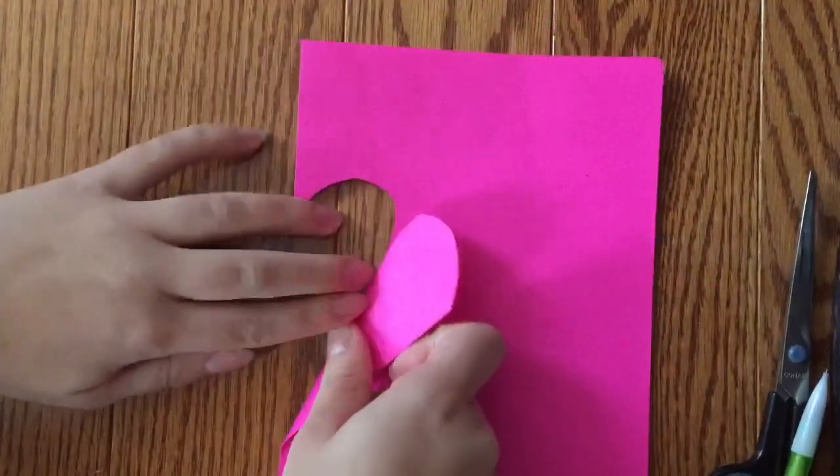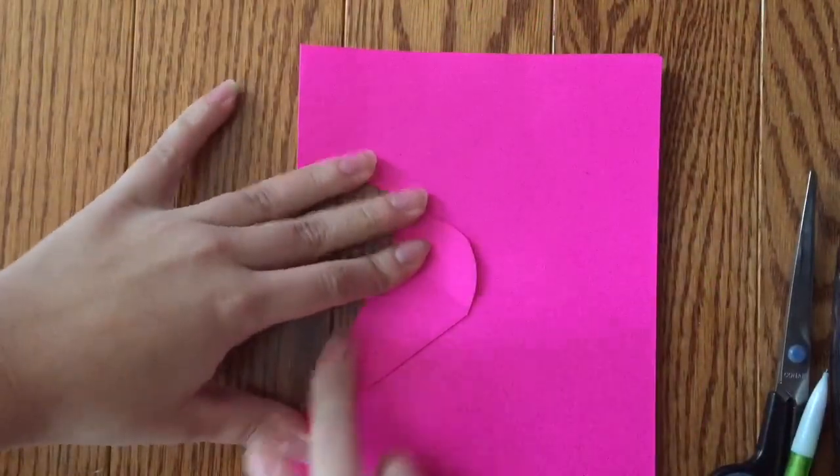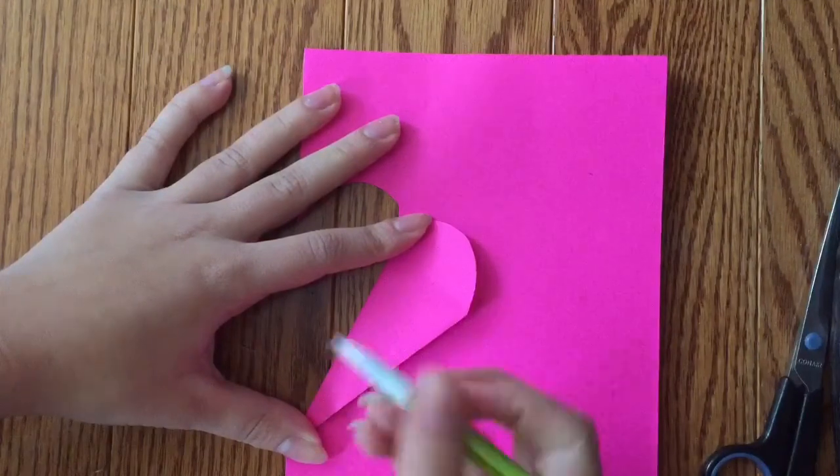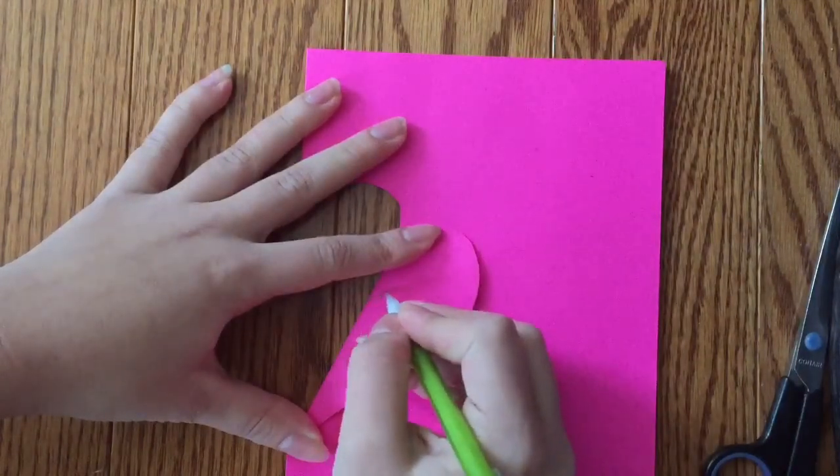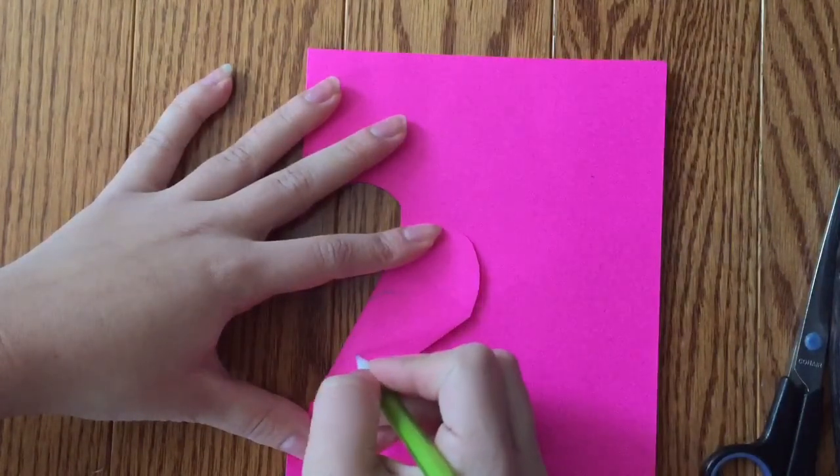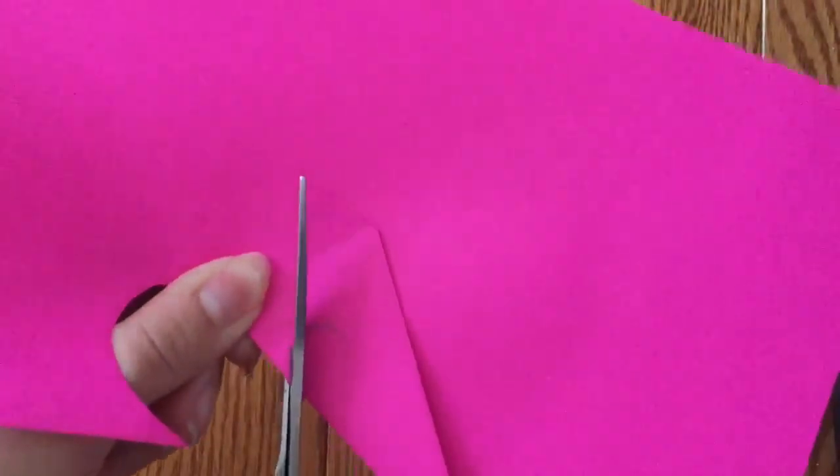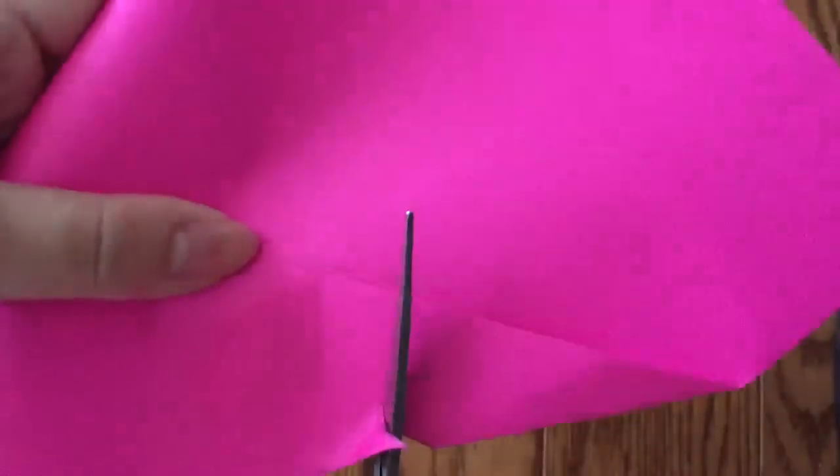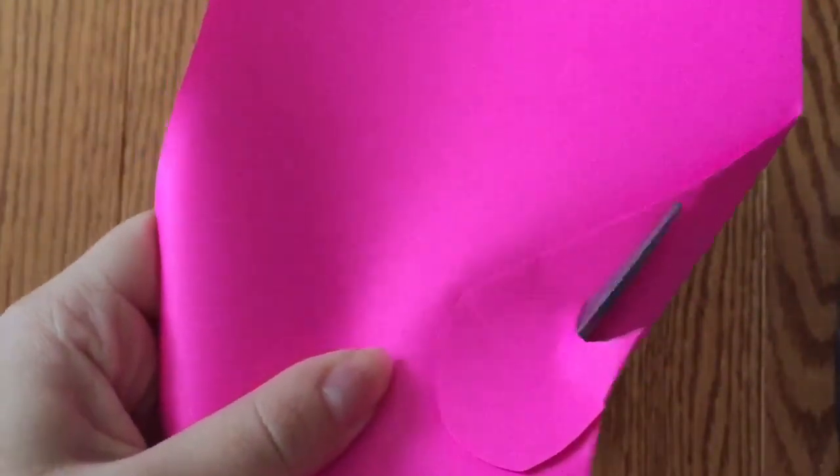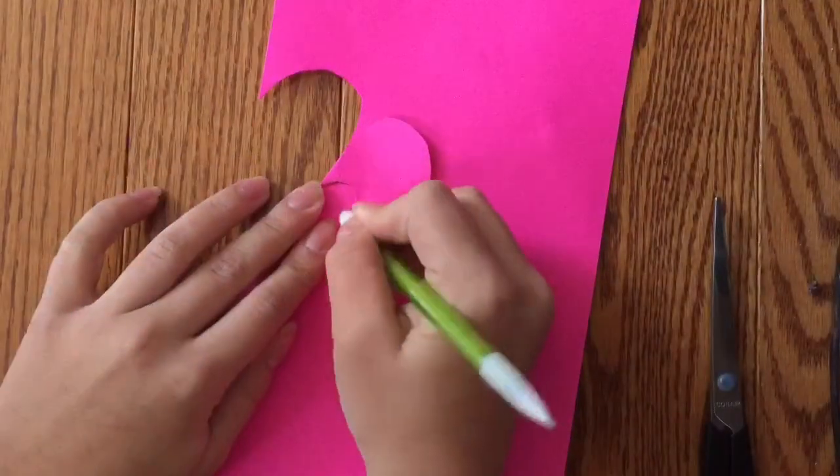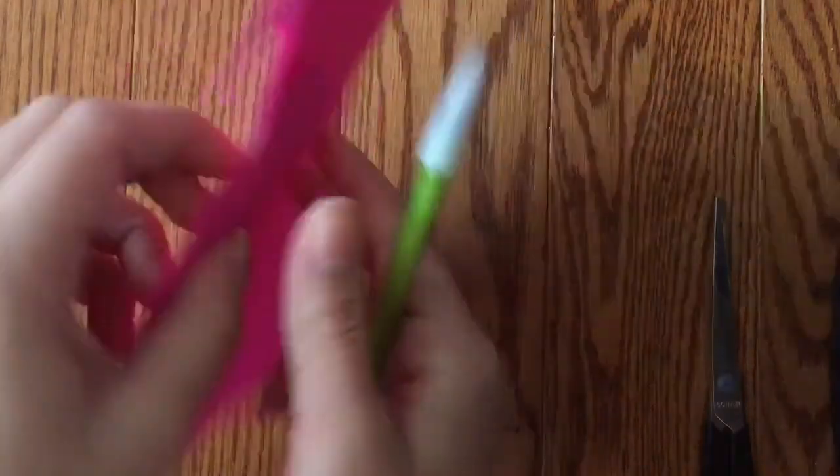Now, going to the previous side that we were on before, we're going to take our pencil and we're going to draw kind of the same thing within the heart that we did. Like we did with the bigger heart, we're going to use our scissors to cut the curve. Again, just erase any extra marks that there may be on the paper.